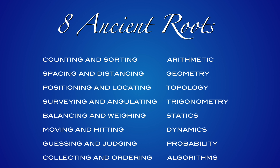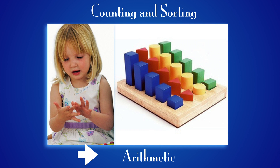According to eight ancient rules, one splits the field into activities: counting and sorting with arithmetic; spacing and distancing with geometry; positioning and locating with topology; surveying and angulating with trigonometry; balancing and weighing with statics; moving and hitting with dynamics; guessing and judging with probability; and collecting and ordering with algorithms.